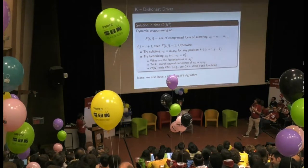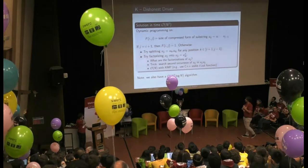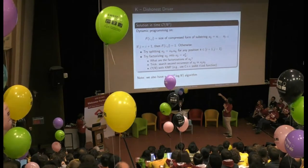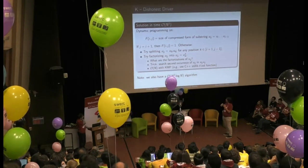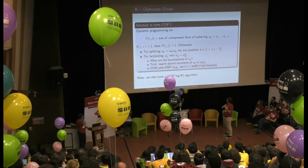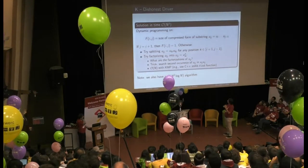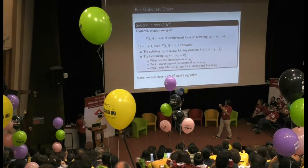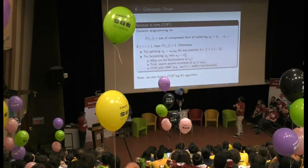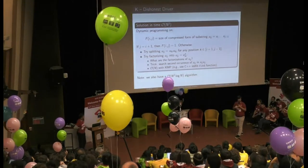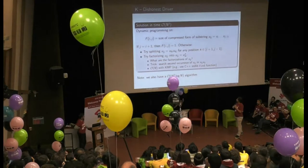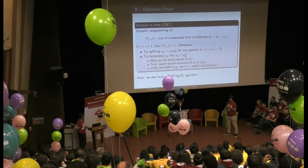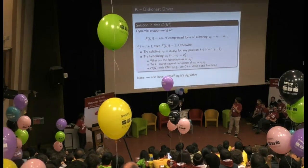The other subproblem is how to find all factorizations of a given substring. One approach is to search for the second occurrence of u_{ij} in u_{ij}·u_{ij}, and from this you can easily compute all factorizations. This can be done in linear time using the KMP algorithm, or using your language's built-in find function, which already implements KMP — for example in C++. There is also an O(n² log n) algorithm, but it's much more complicated and relies on a word combinatorics lemma.